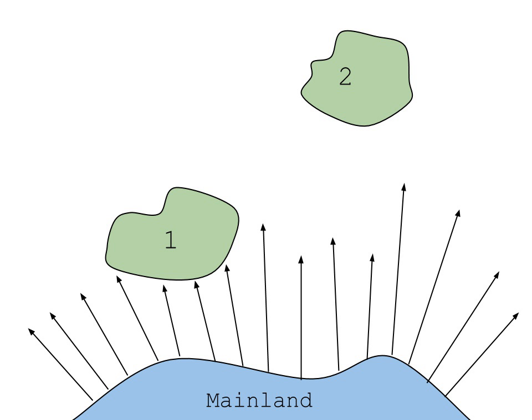For biogeographical purposes, an insular environment or island is any area of habitat suitable for a specific ecosystem, surrounded by an expanse of unsuitable habitat. While this may be a traditional island, a mass of land surrounded by water.